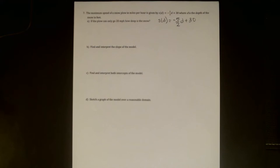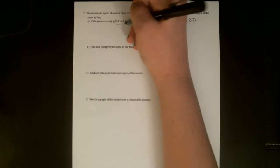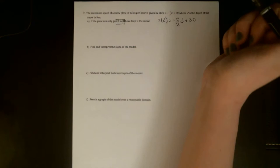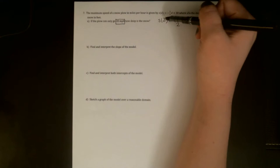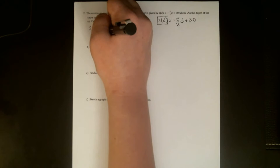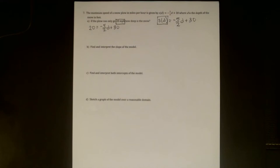Usually the trickier part of word problems is when you're not given the equation and you have to go find it. But I want to start off with one where we have it and we're just trying to interpret some different information. All right, first question. If the plow can only go 20 miles per hour, how deep is the snow? So we're being given a value of one of our two variables, either our input or output, and we should be able to find the value of the other variable.